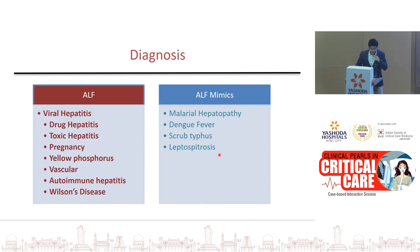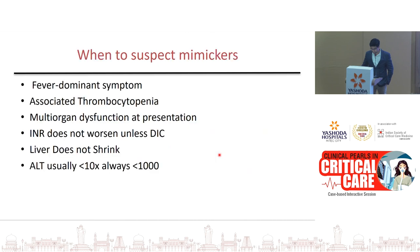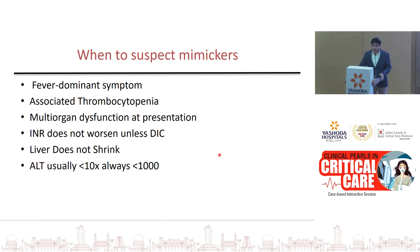For critical care we need to know the mimickers of acute liver failure: malaria, dengue, scrub typhus, and leptospirosis. When to suspect these mimickers: when fever is the predominant symptom, when associated with thrombocytopenia or multi-organ dysfunction like hepatitis, AKI, and encephalopathy together, or if INR doesn't worsen unless DIC sets in, and ALT is less than 1000.